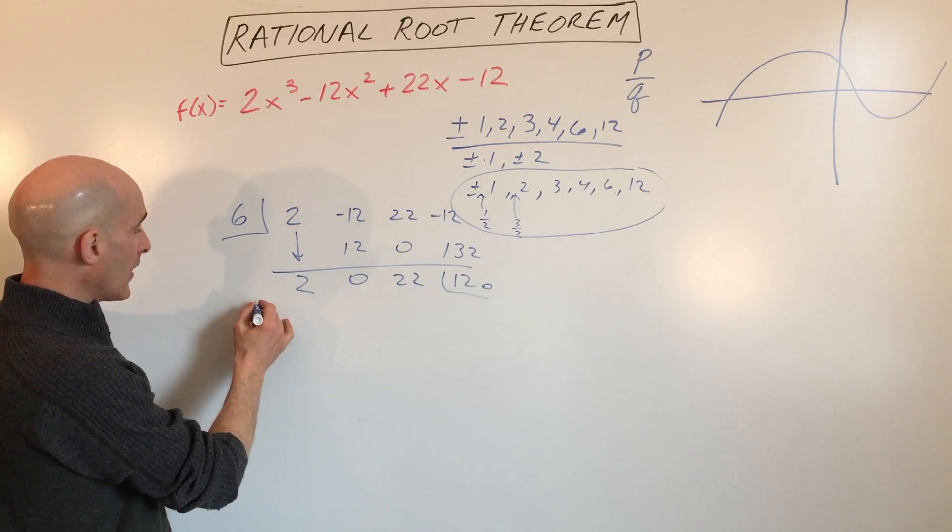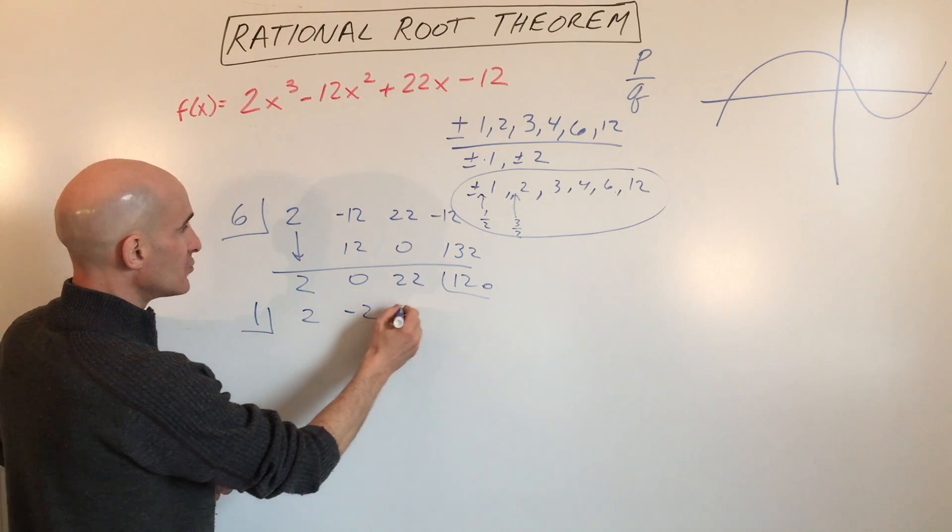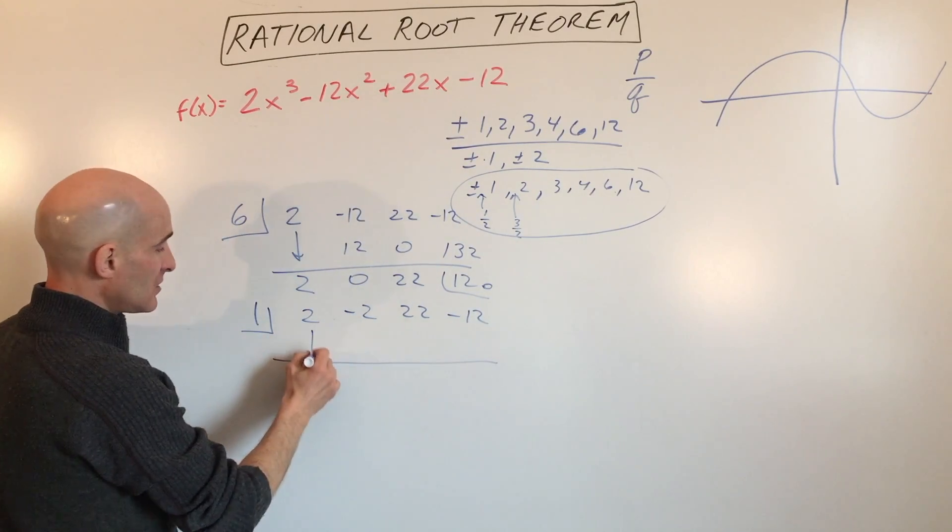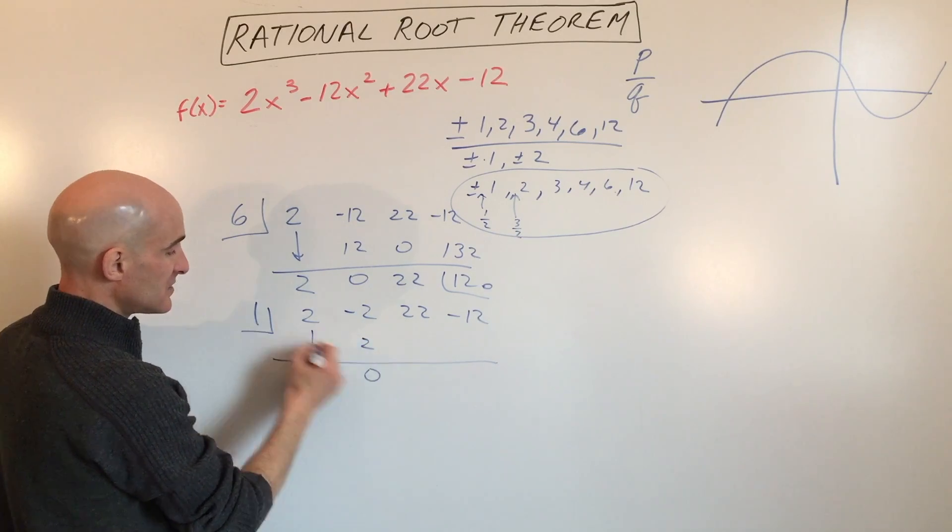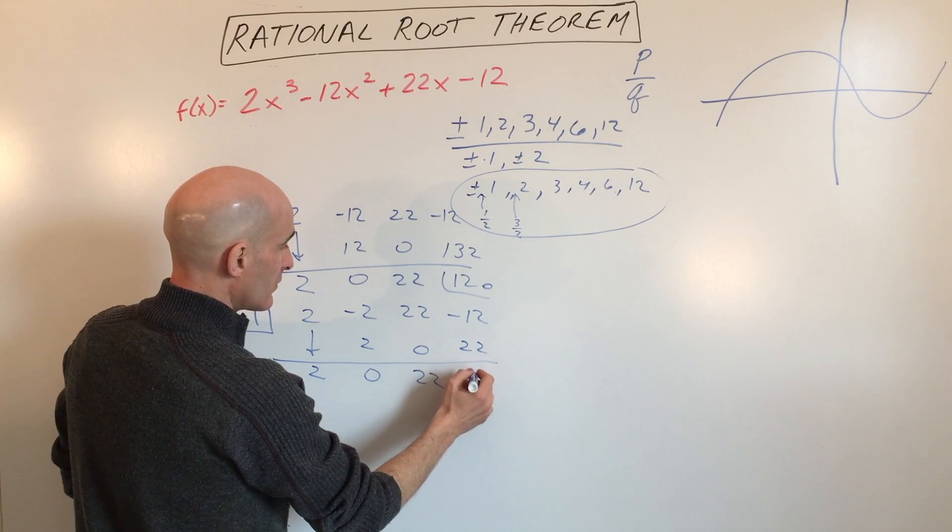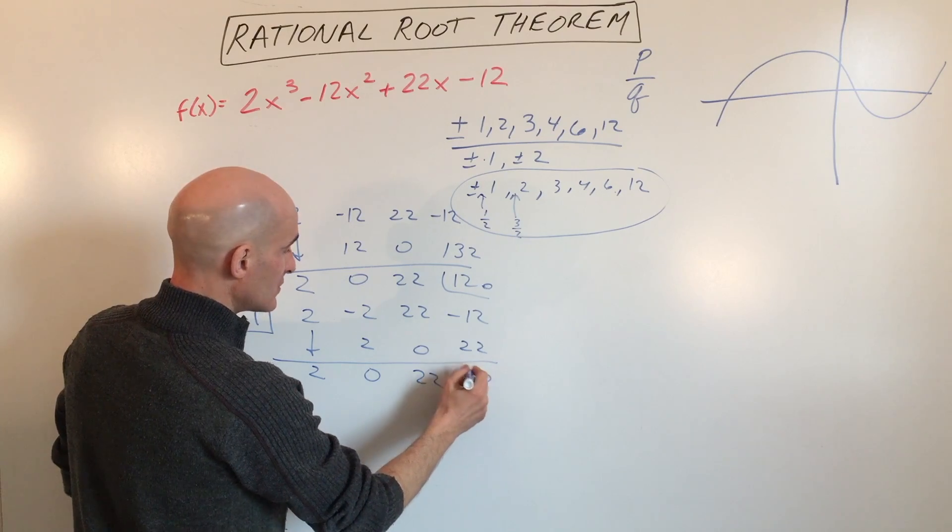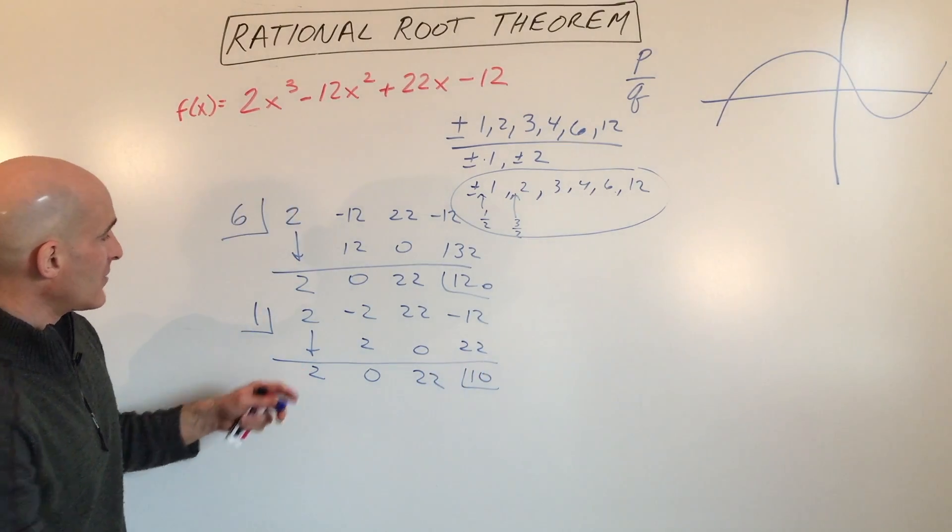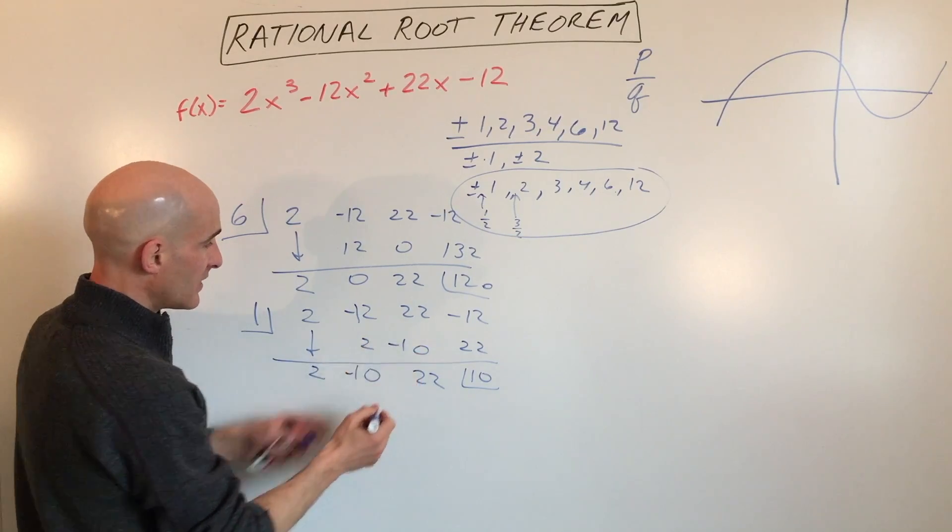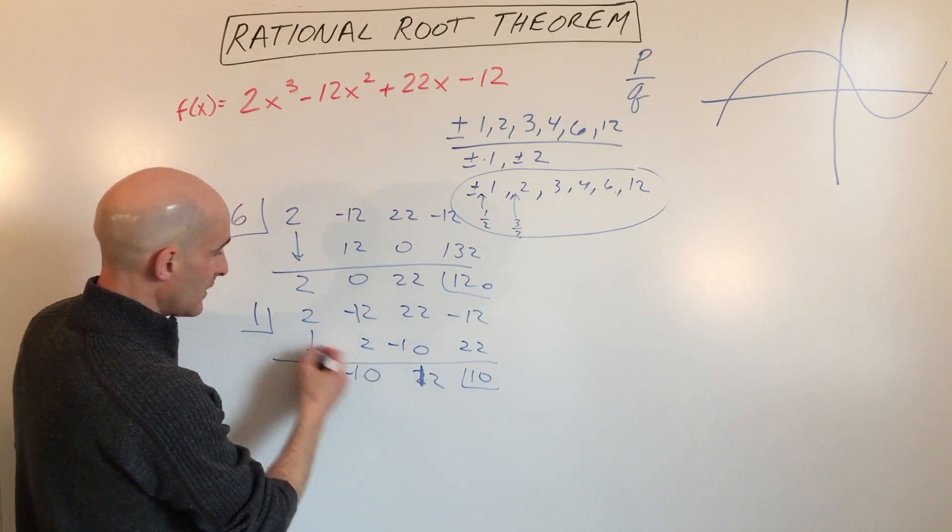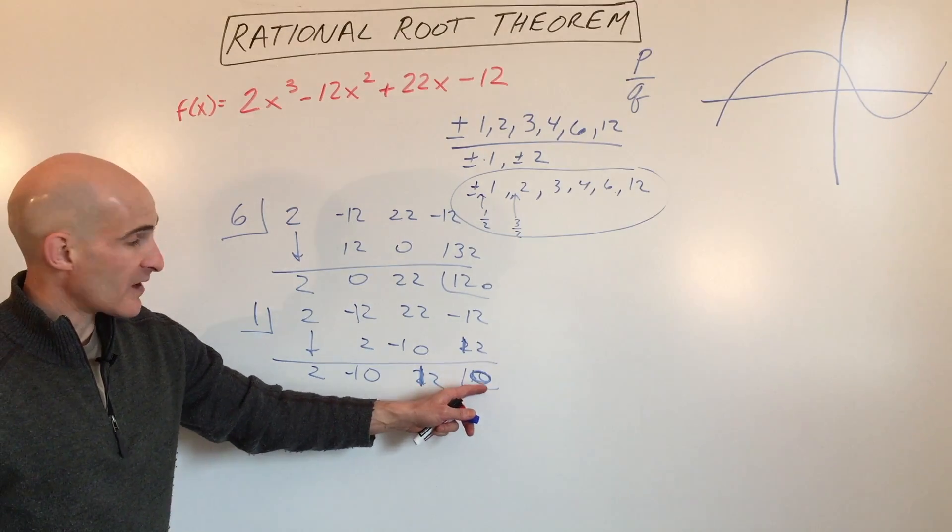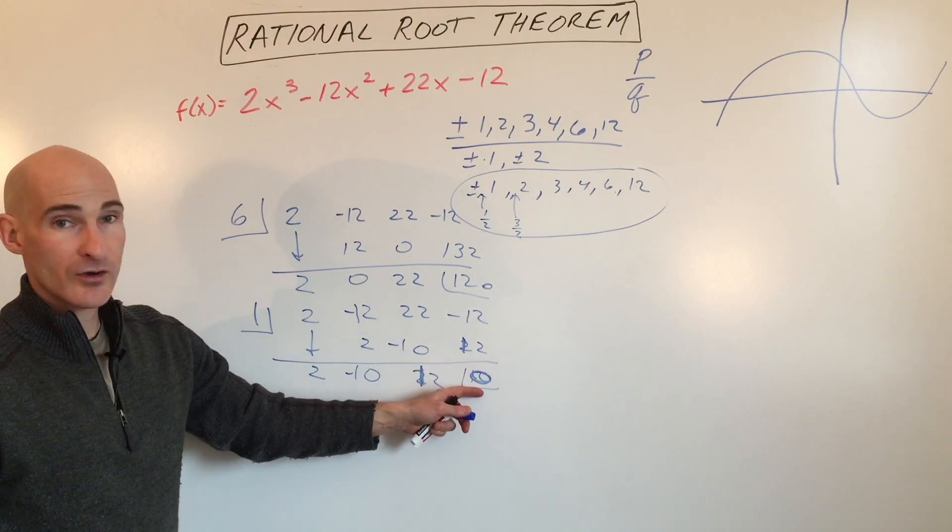Let's try another one, let's say we want to try 1. So 2, negative 12, 22, negative 12, those are our coefficients. Doing the synthetic division: 2, 2, 0, 22, 22. Oh I made a mistake because this is 12. Let's do that again, so this would be negative 10, negative 10, 12, 12, and this would be 0. There we go, we got 0 as a remainder, so that means 1 is a zero, it is a root.